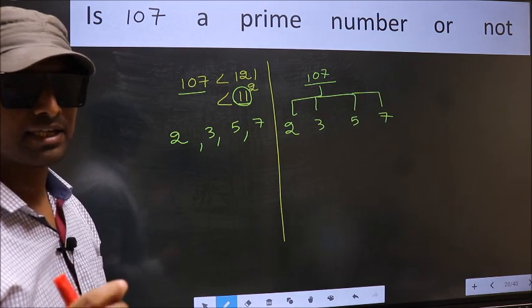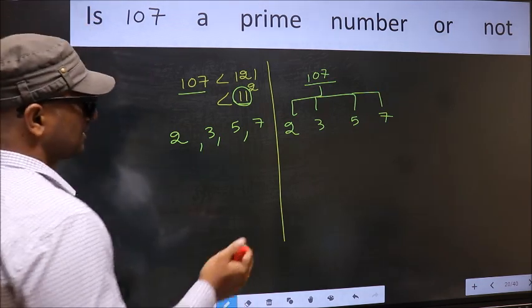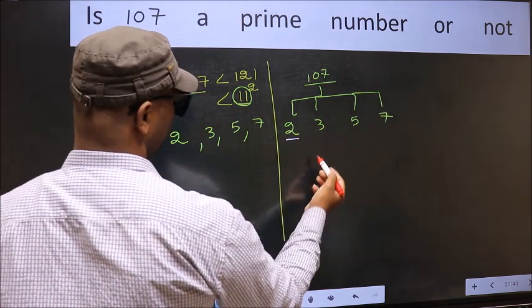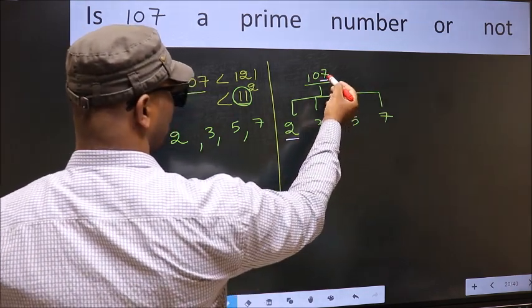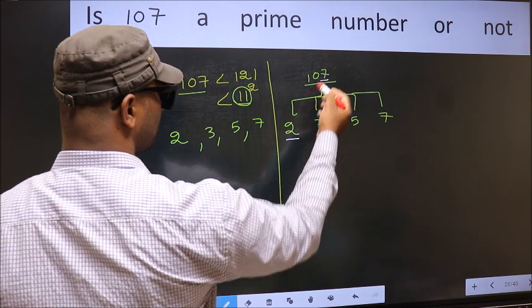Let us check the divisibility. Starting with 2. Last digit 7 is not even, so this is not divisible by 2.